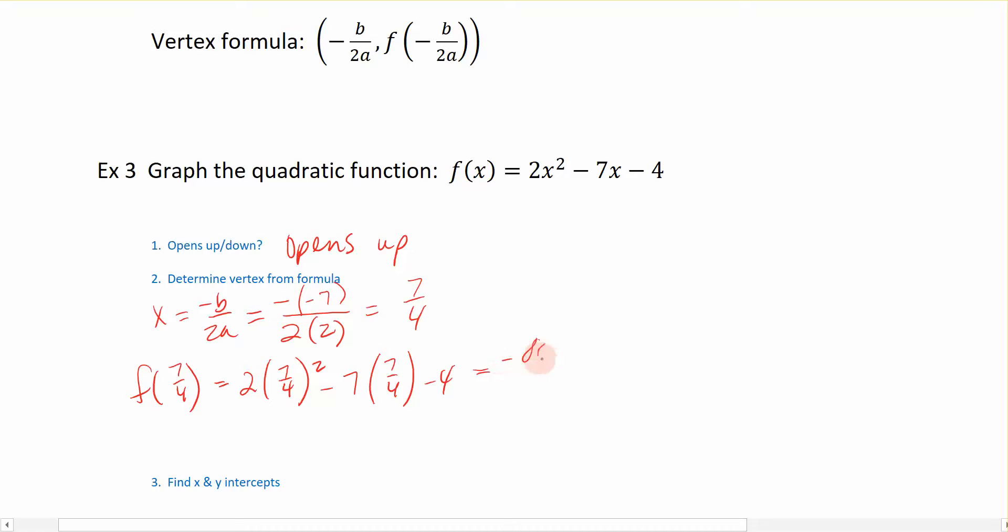So we have negative 81 eighths. What did we find? We found the exact value of the vertex. The x coordinate is at 7 fourths, the y coordinate is at negative 81 eighths. This is the point on the graph where the vertex is, and I'm going to leave it in its fraction form if I need to answer it that way on the computer.